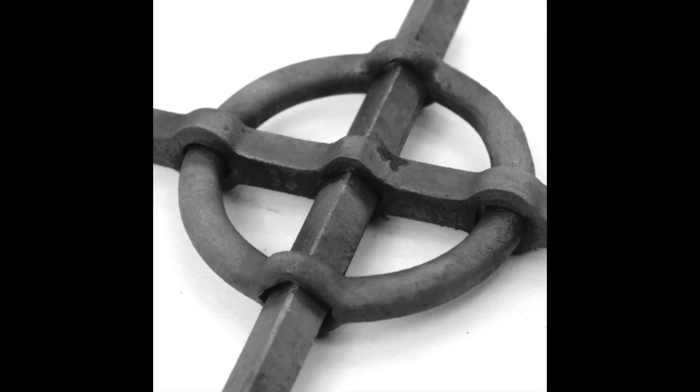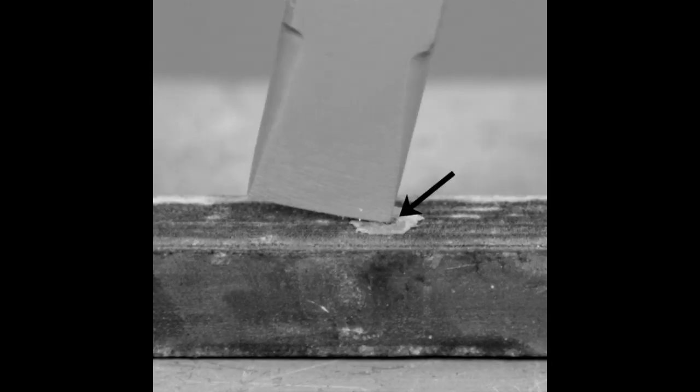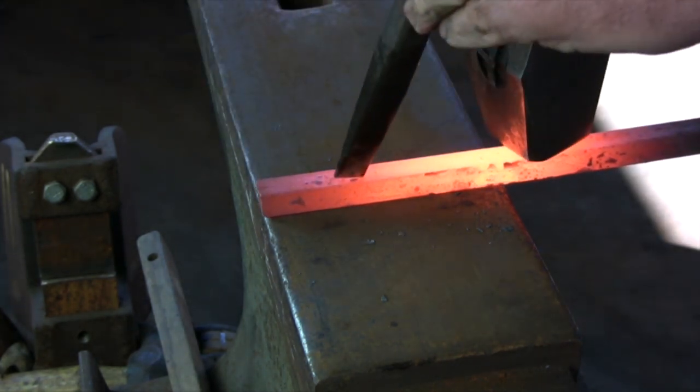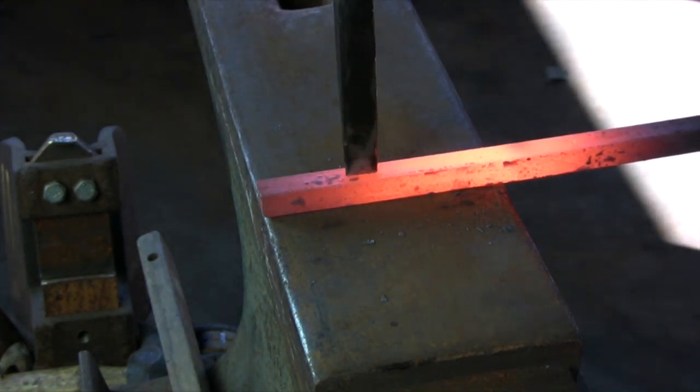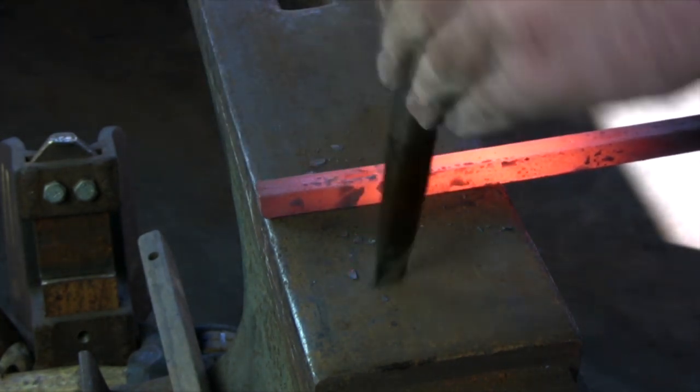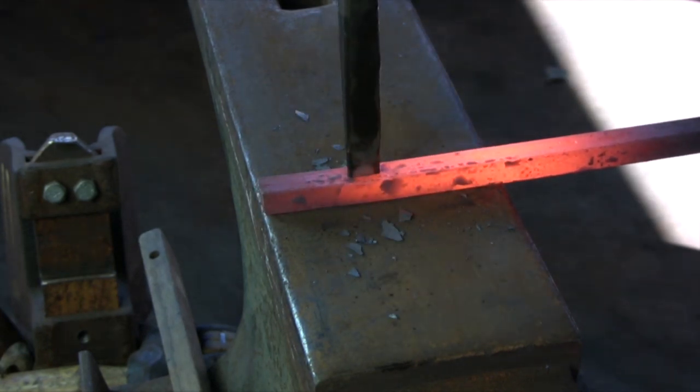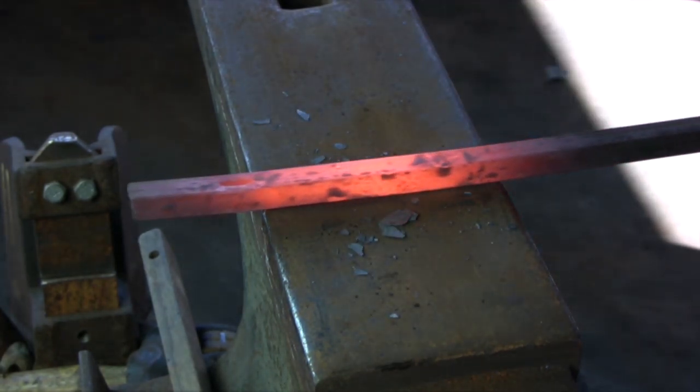Let's take a look at the square bar there in the middle, the one with three holes in it. This gives us a chance to look at how we deal with a center punch mark and a slot punch. Center punch mark is quite a big hole, so you can see I'm using the corner of the slot punch, find the center punch mark, stand the punch up, and then go to work.